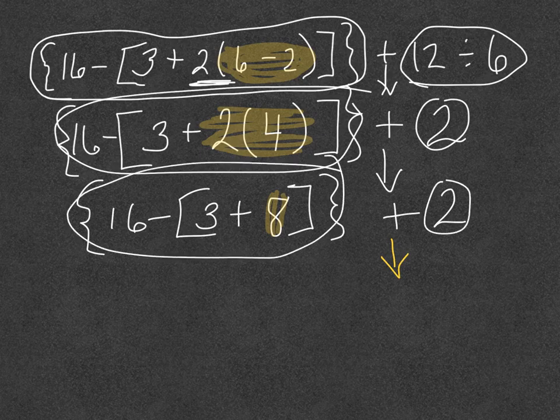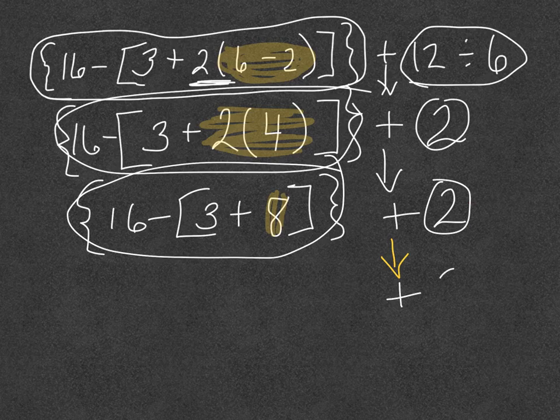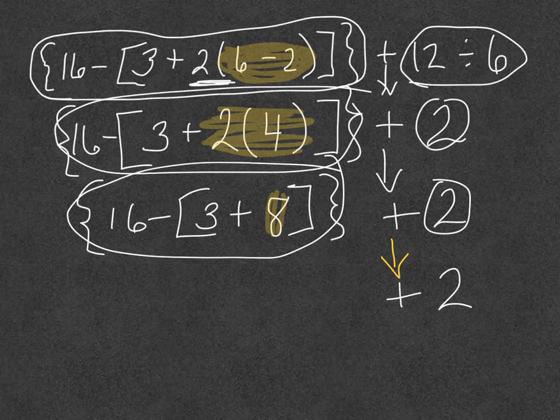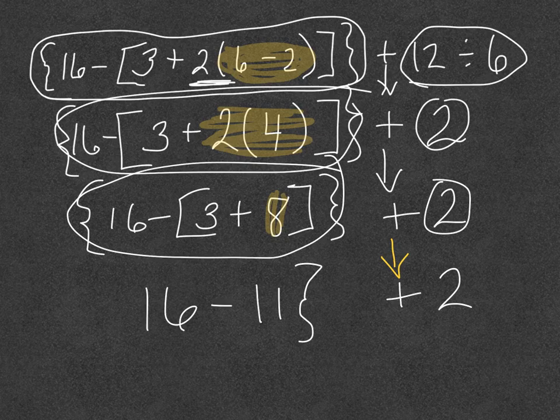Circling my terms. Bringing my addition sign down. Bringing my 2 down. Now I can finish up my brackets. 3 plus 8 is 11. Now I bring my 16 minus and my braces down.